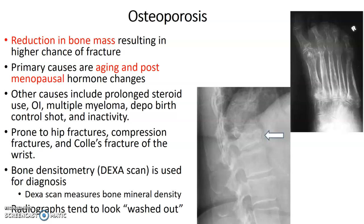Now, osteoporosis — not the same as osteopetrosis. Osteoporosis is a reduction in bone mass, causing a high chance of fracturing. Causes include aging, postmenopausal hormonal changes, heavy steroid use, osteogenesis imperfecta, multiple myeloma, the Depo birth control shot, and inactivity. These patients are prone to hip fractures, compression fractures, and Colles' fracture of the wrist. A bone densitometry, or DEXA scan, is used to diagnose how dense their bones are. The bones will look a little washed out and thinner on imaging.